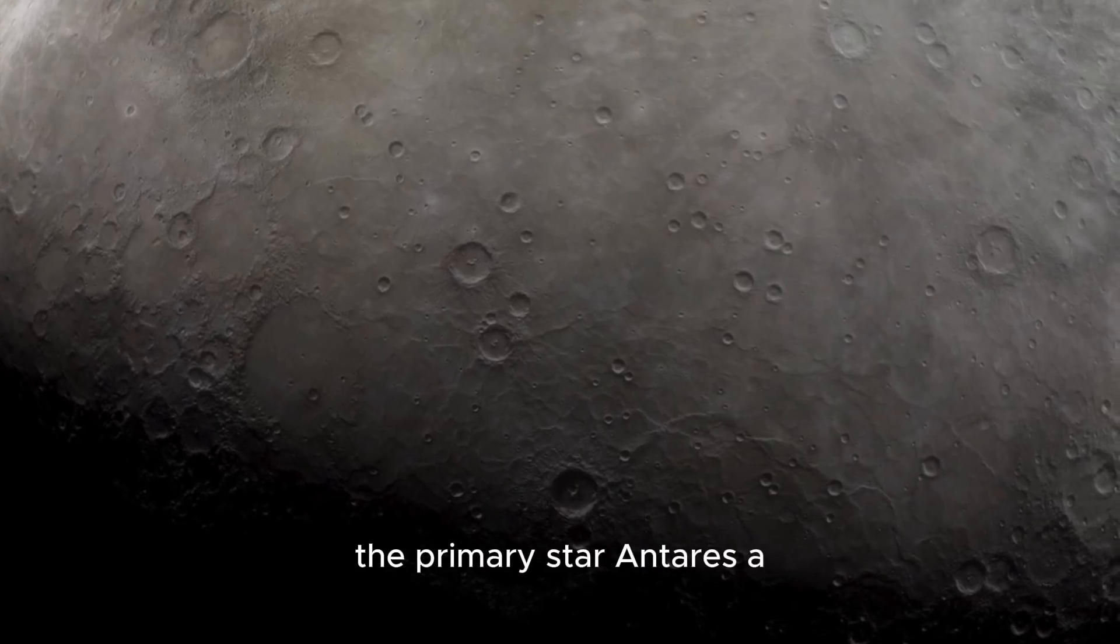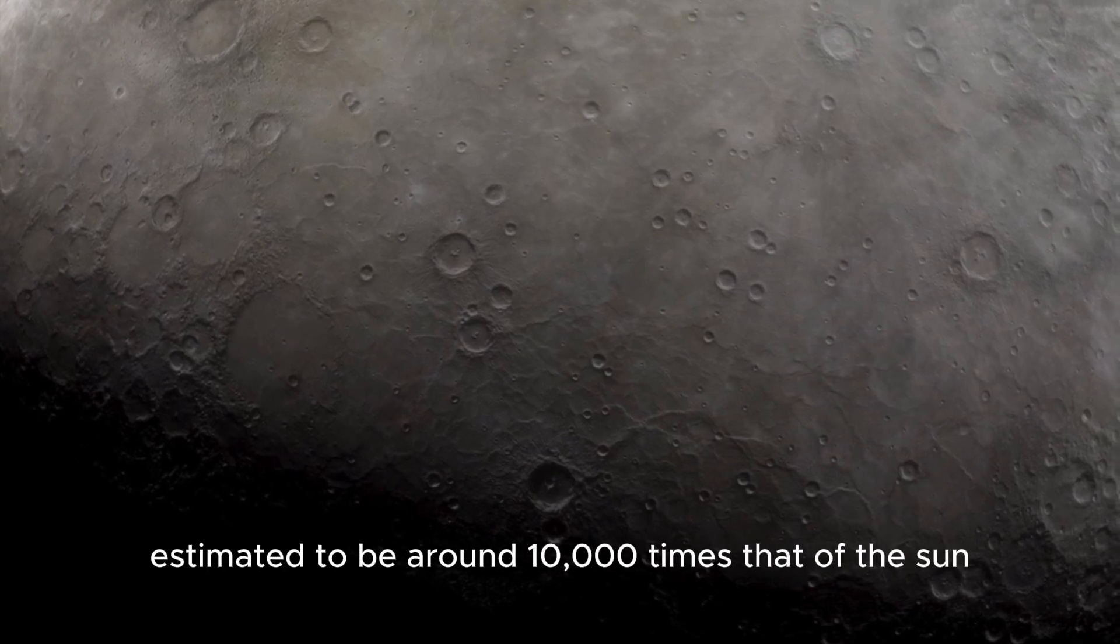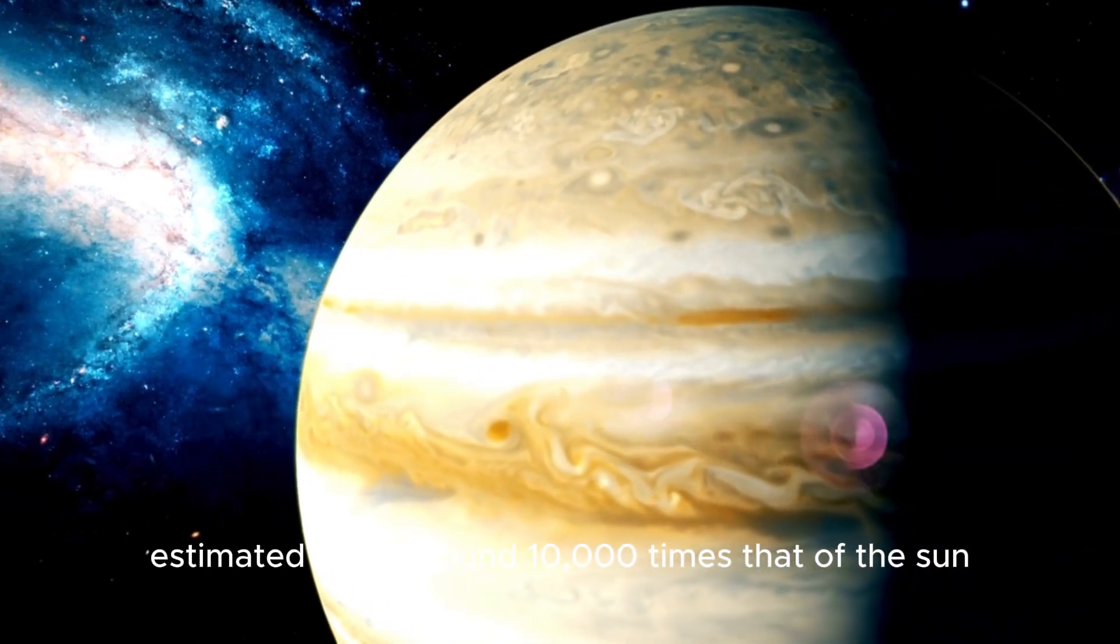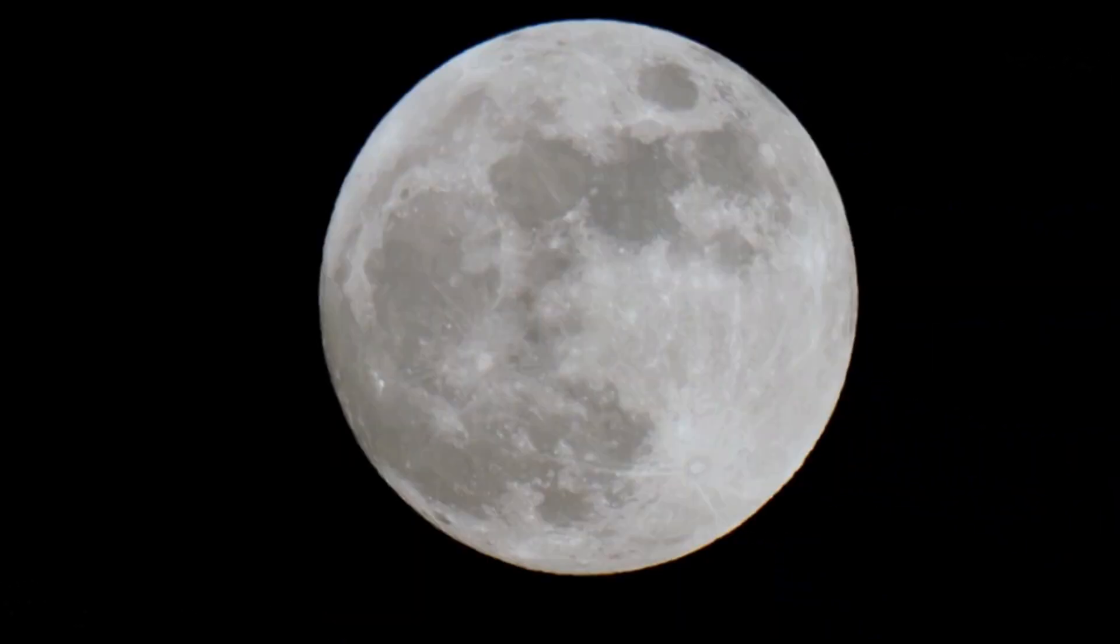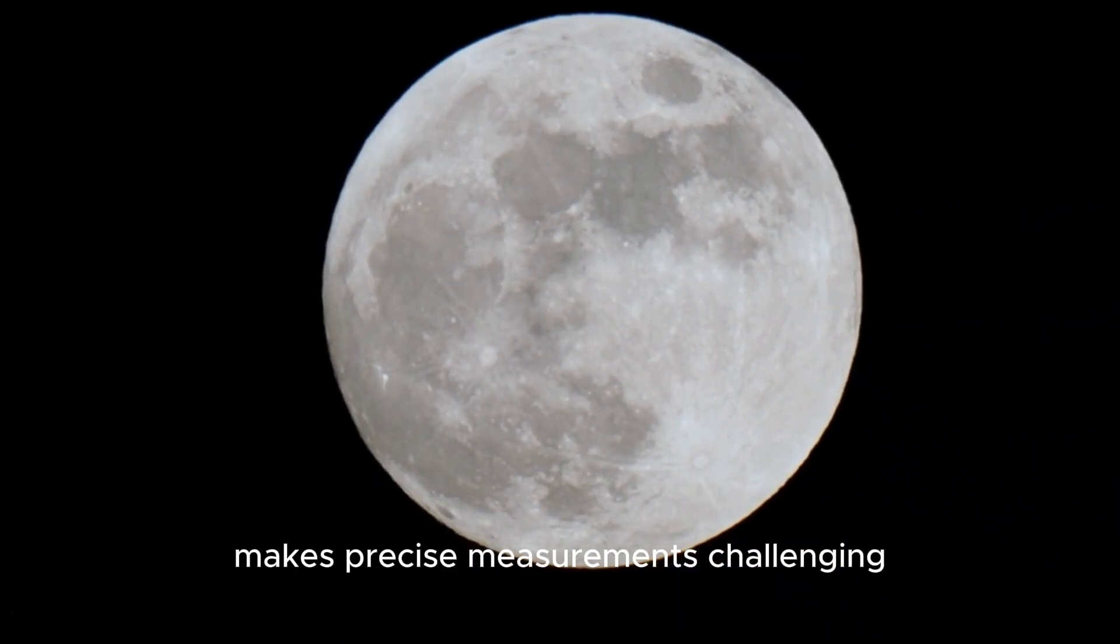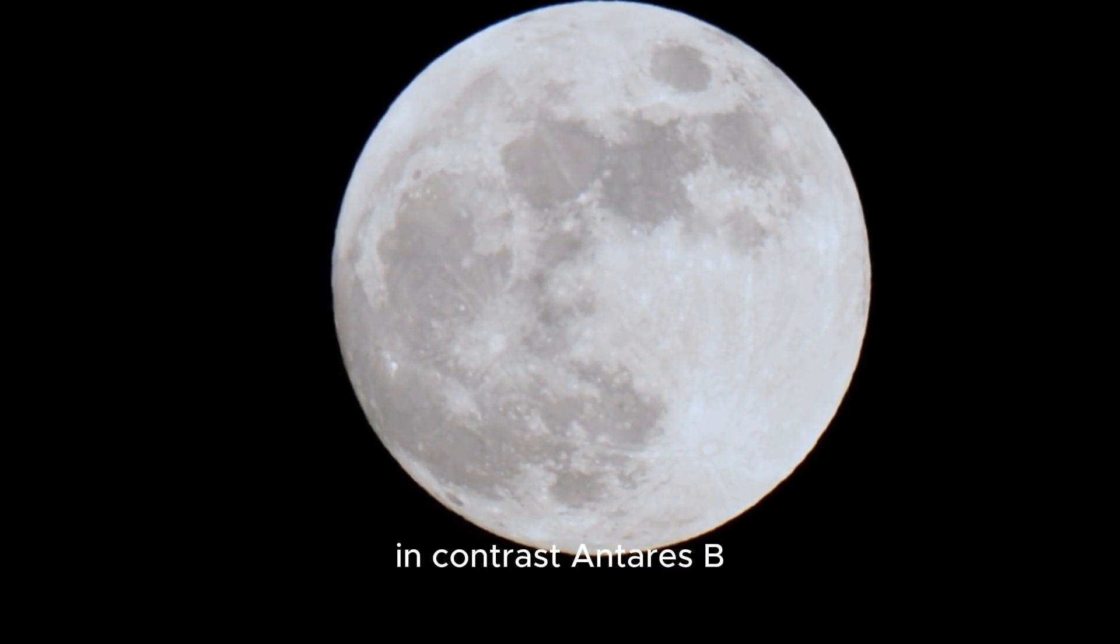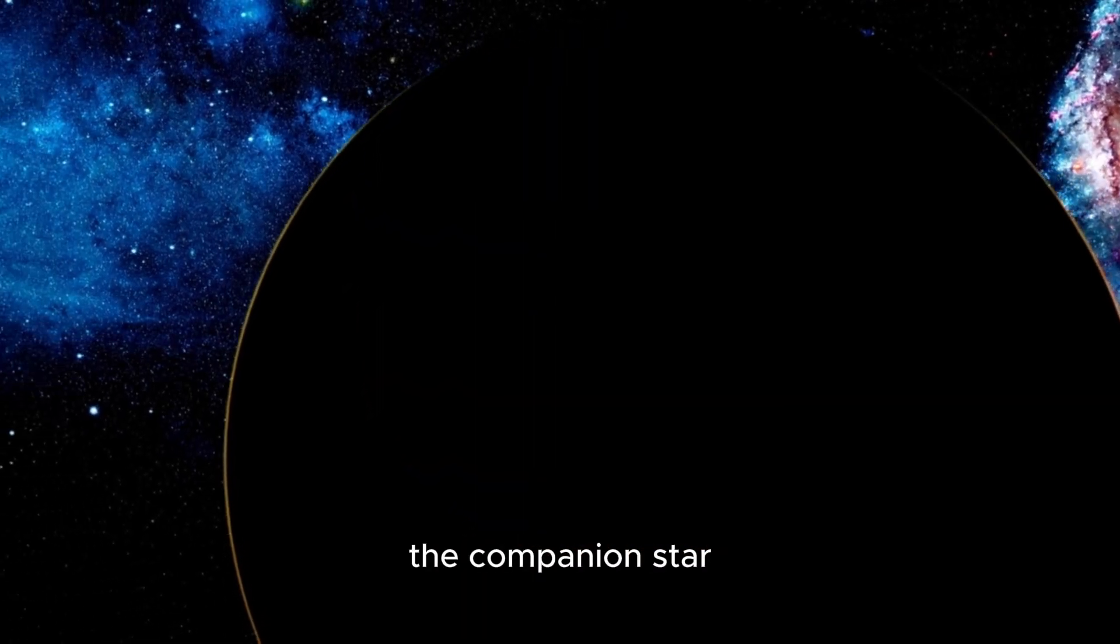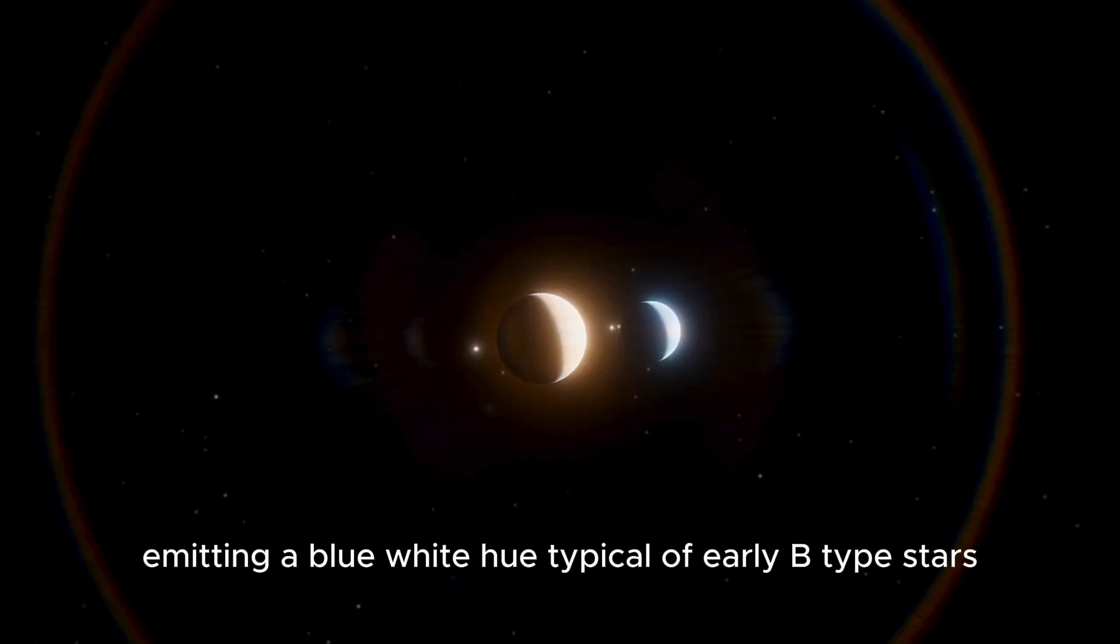The primary star, Antares A, is a red supergiant with a luminosity estimated to be around 10,000 times that of the Sun. Its massive mass, roughly 12 times that of our Sun, makes precise measurements challenging due to its pulsating nature and obscured outer layers. In contrast, Antares B, the companion star, displays a noticeable departure in appearance, emitting a blue-white hue typical of early B-type stars.